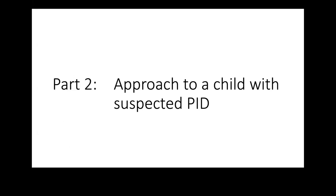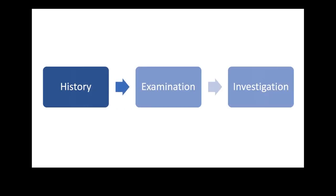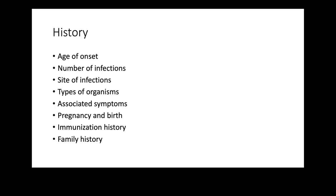Now that we have completed the basics, we move to the approach to a child with suspected PID. When a child comes with frequent infections and we apply the four-question system, finding that the pattern is beyond normal, we need to evaluate this child. We take the history, examination, and investigations. Important aspects of history include age of onset, number of infections, site of infections, and type of organisms.